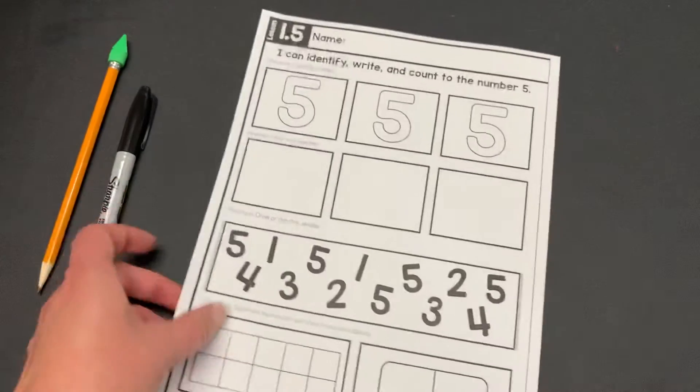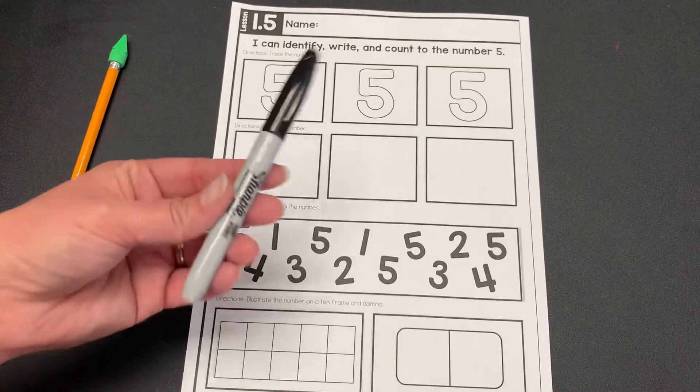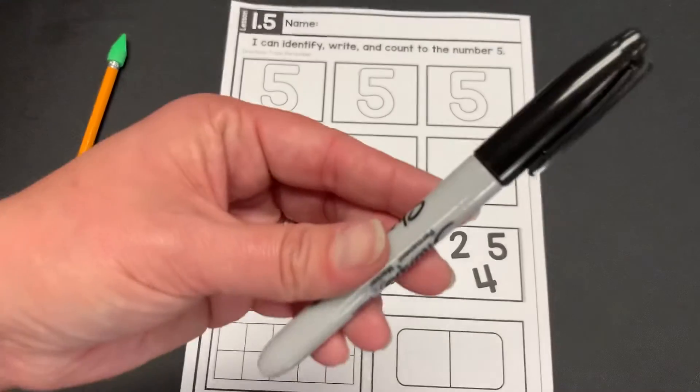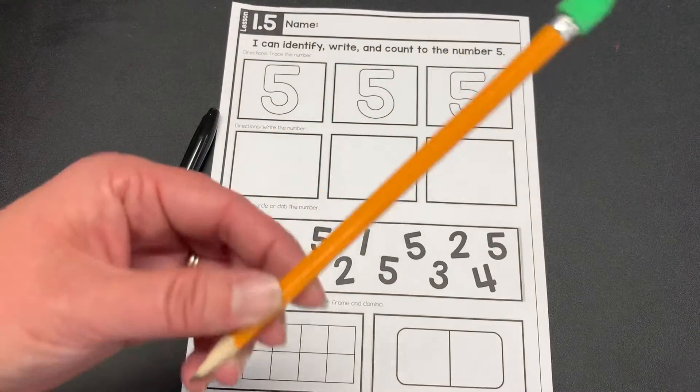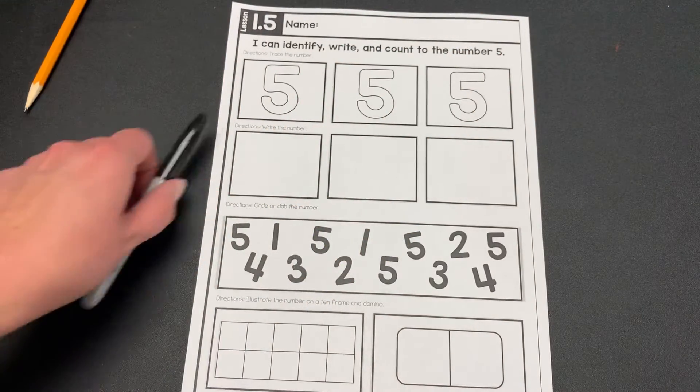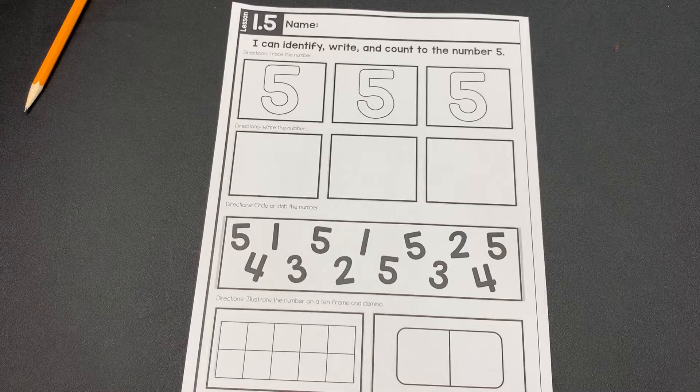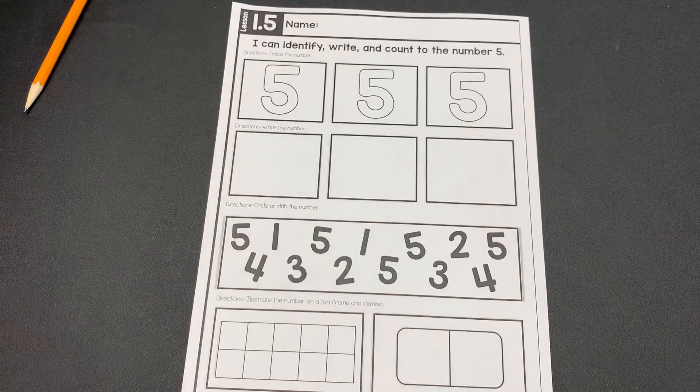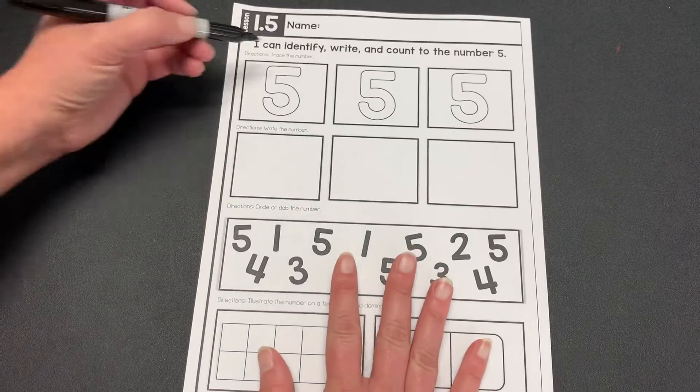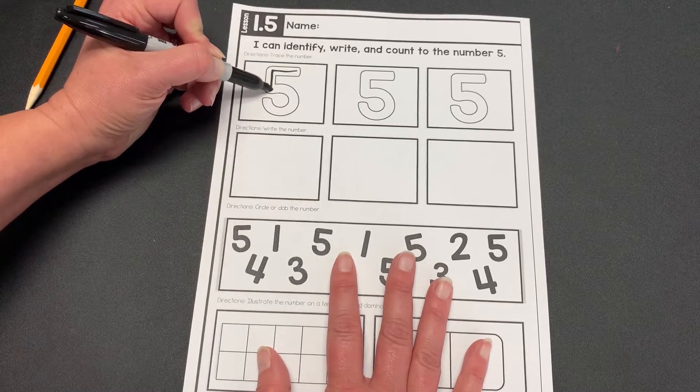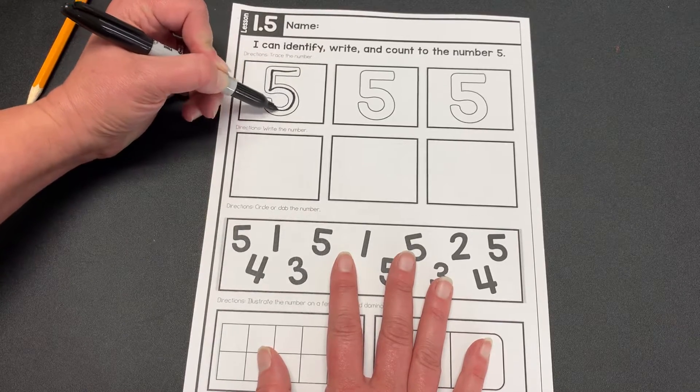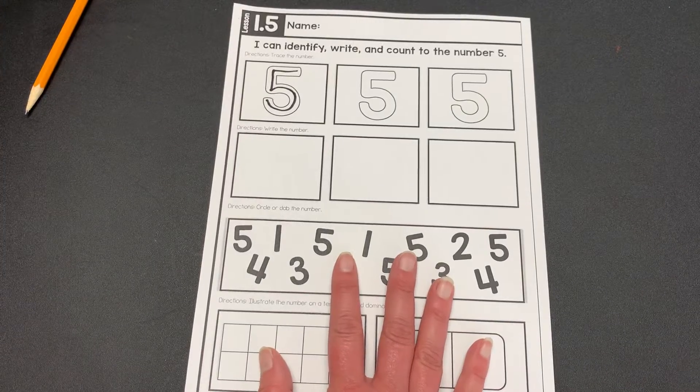Now, I'm going to be writing my work with a pen so that you can super duper see it with your super duper eyes. But you're going to write your work with a pencil. Here I go. The first thing I need to do is write the number five. I'm going to go back, down, curve, around. That's the number five. It can be a little bit tricky at first.